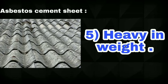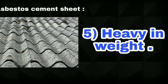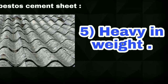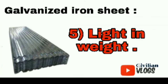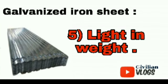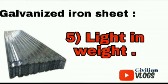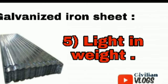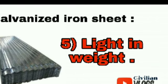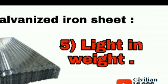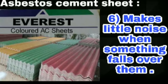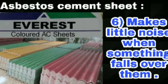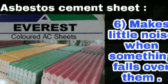The asbestos cement sheet is a little heavy weight, and the galvanized iron sheet is lightweight. Because the thickness is less, the weight is also less. The iron sheet is less in weight. Next, point number 6: the asbestos cement sheet makes little noise when something falls over it.